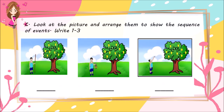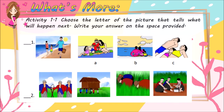Look at the pictures and arrange them to show the sequence of events. Write 1 to 3. For your first activity, choose the letter of the picture that tells what will happen next. Write your answer on the space provided.